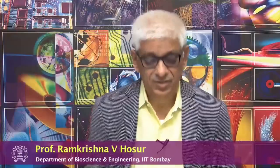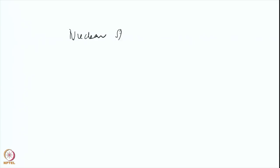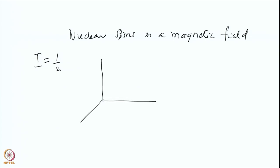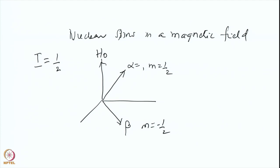We were discussing nuclear spins in a magnetic field. Consider a spin with I equal to half — it has two possible orientations in space. One orientation is the alpha state with m equal to half, and the other is the beta state with m equal to minus half. The magnetic field is applied along the z axis, so the alpha state has lower energy and the beta state has higher energy.